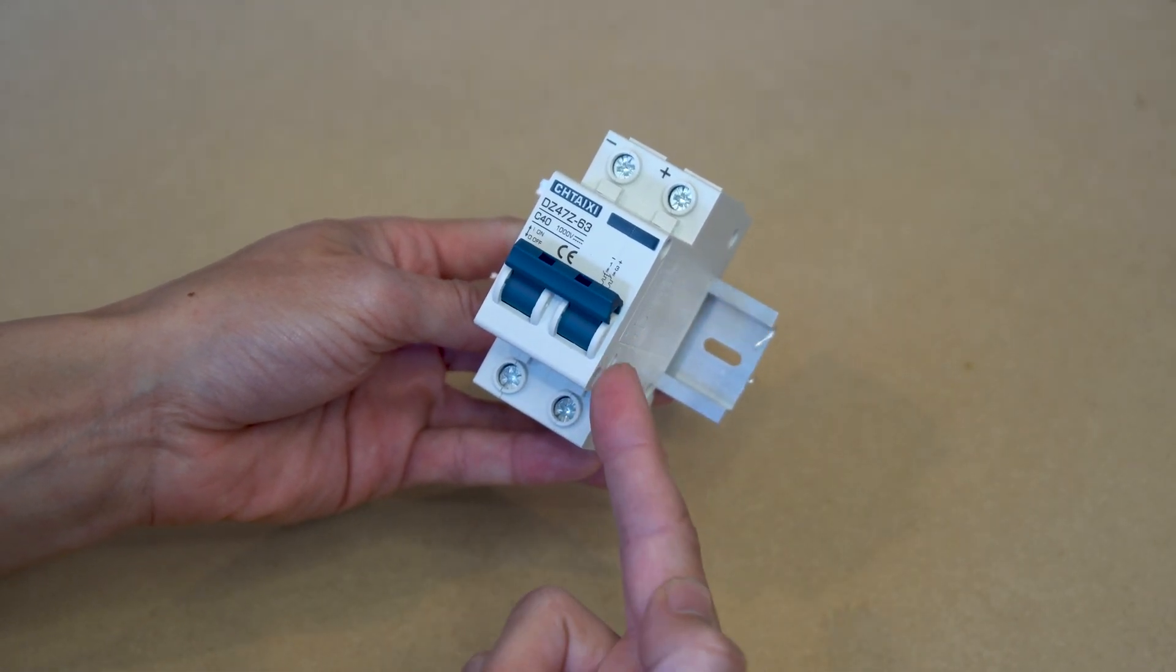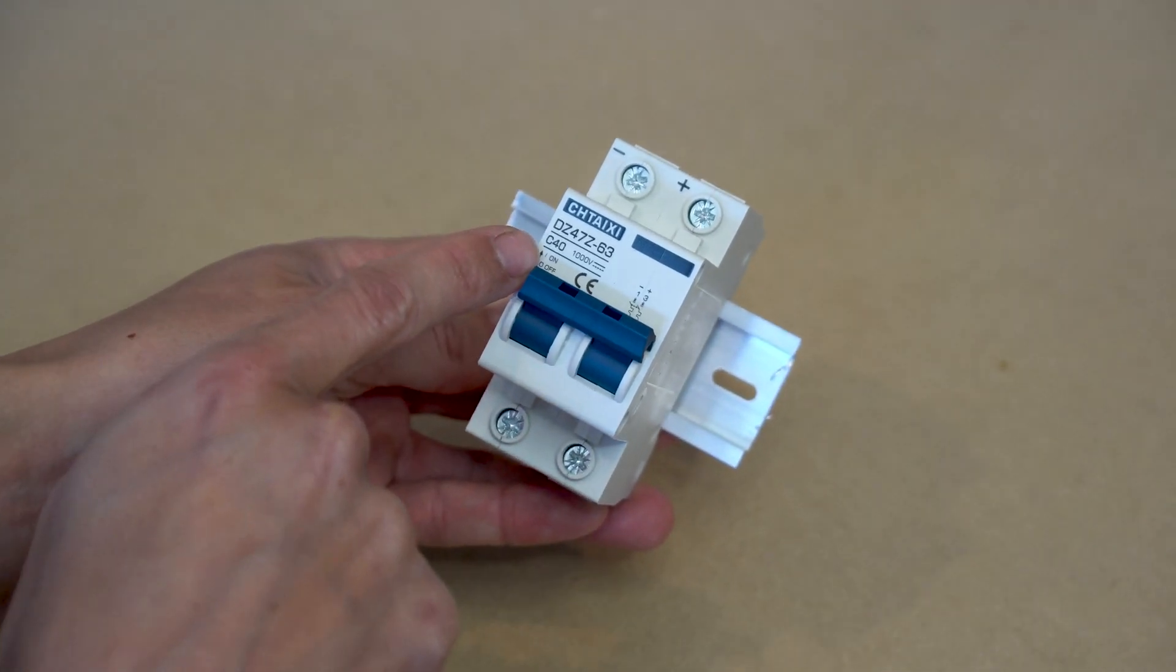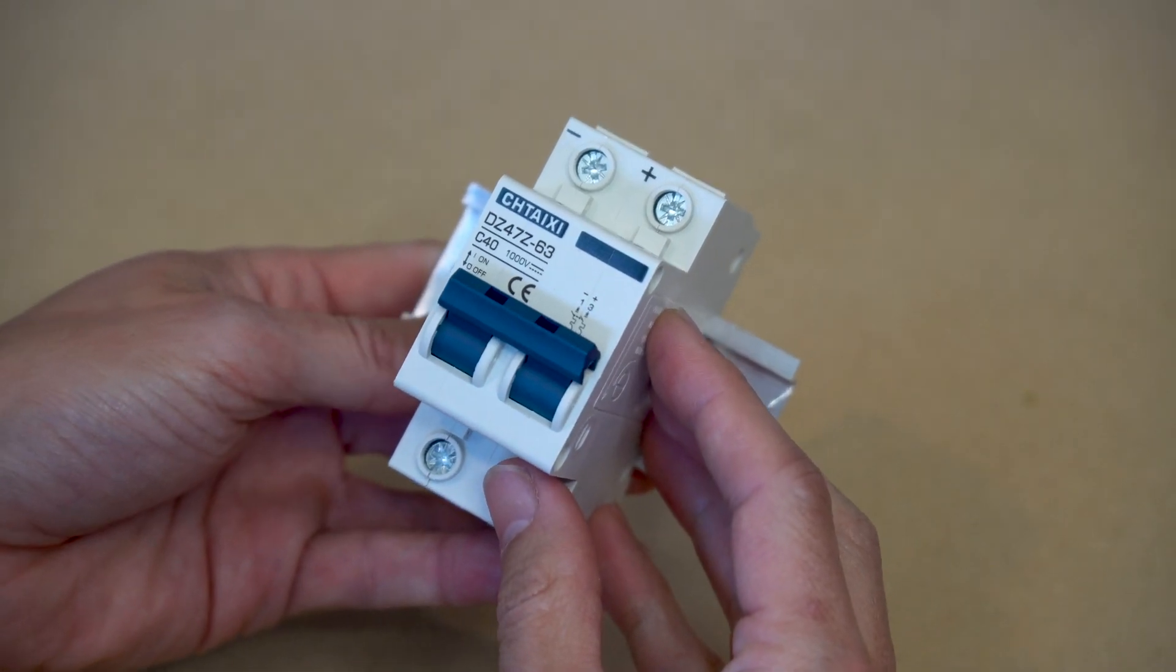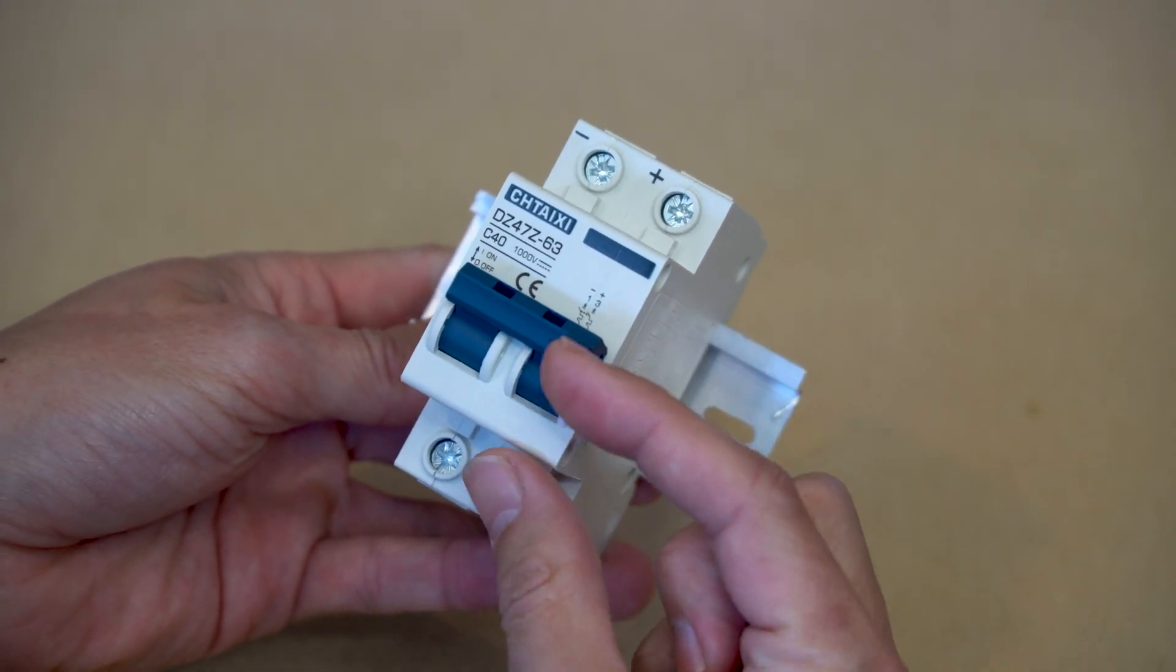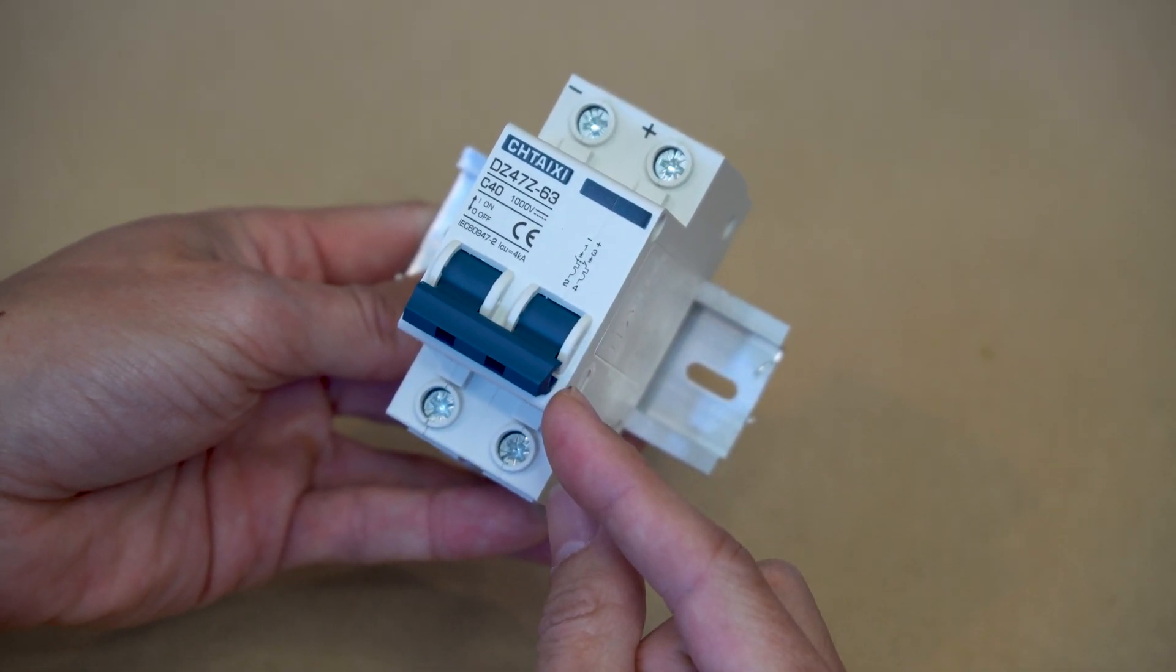Specifically in my hand is the 40 amp rated breaker and you can see this in the front where it says C40. This breaker is designed to switch off once the rated current is reached. When that happens this switch will flip down breaking the circuit and stopping the flow of power.